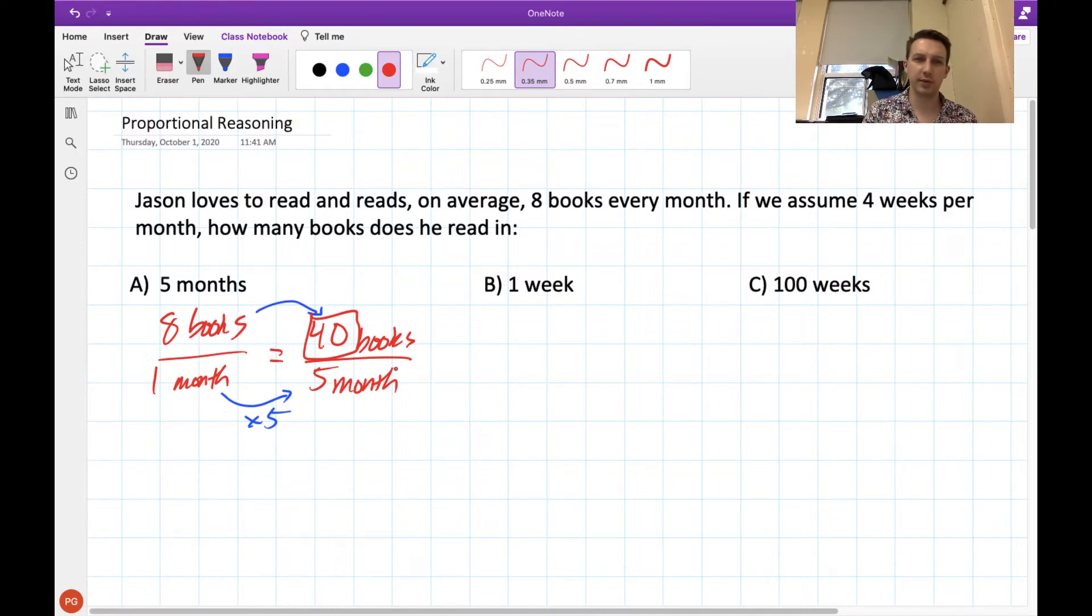Now you probably didn't need to use the ratios like this in order to help you, but it is a helpful tool. 8 books every month, 5 months, most of you could probably guess that it's going to be 8 times 5. But as we get to some of these harder questions, it's a lot easier to use this sort of tool, comparing one rate to another rate, where we know the rate needs to be constant.